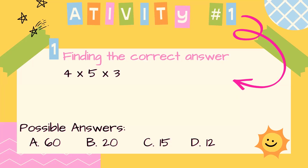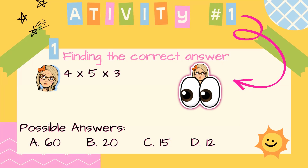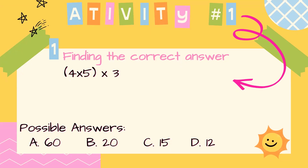Let's work on Activity number 1. Remember that first of all, we need to use parentheses to show which factors we're going to multiply first. This is the grouping I'm going to use: I'm going to multiply 4 times 5 first, and then the product times 3. Let's begin: 4 times 5 equals 20.